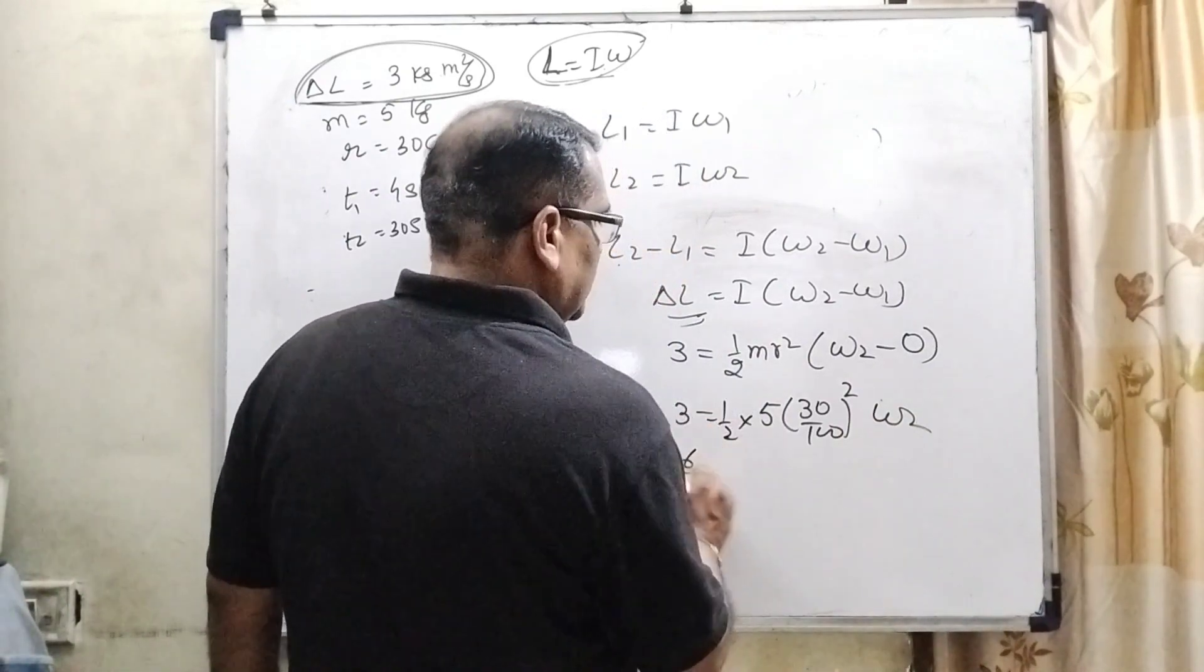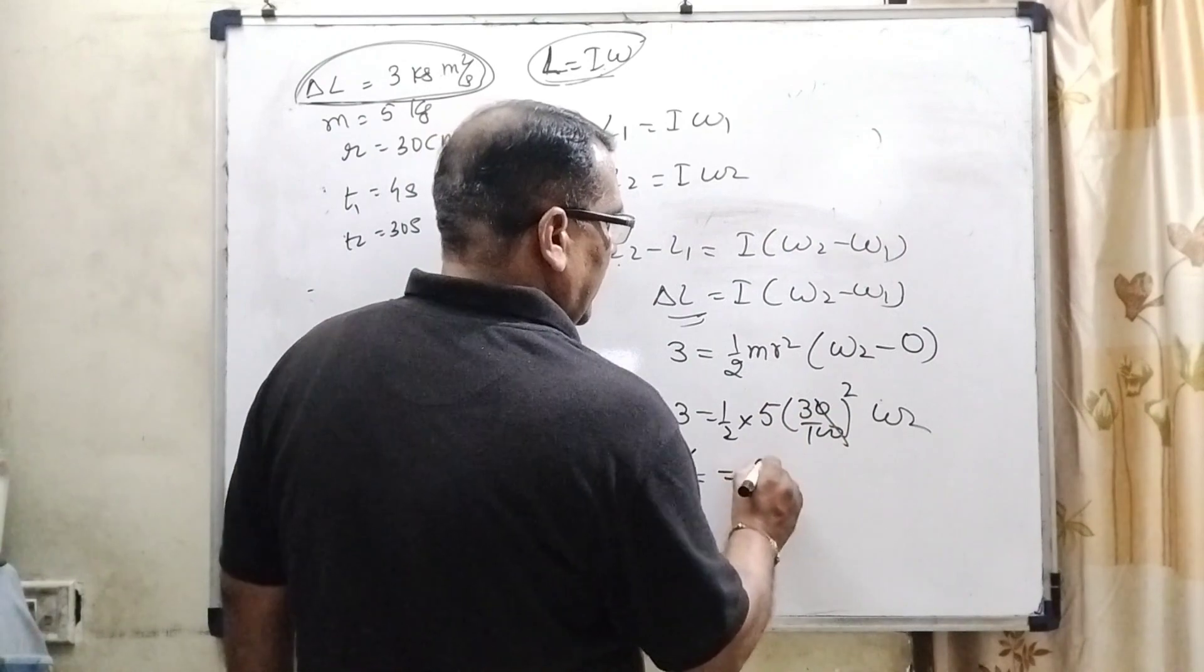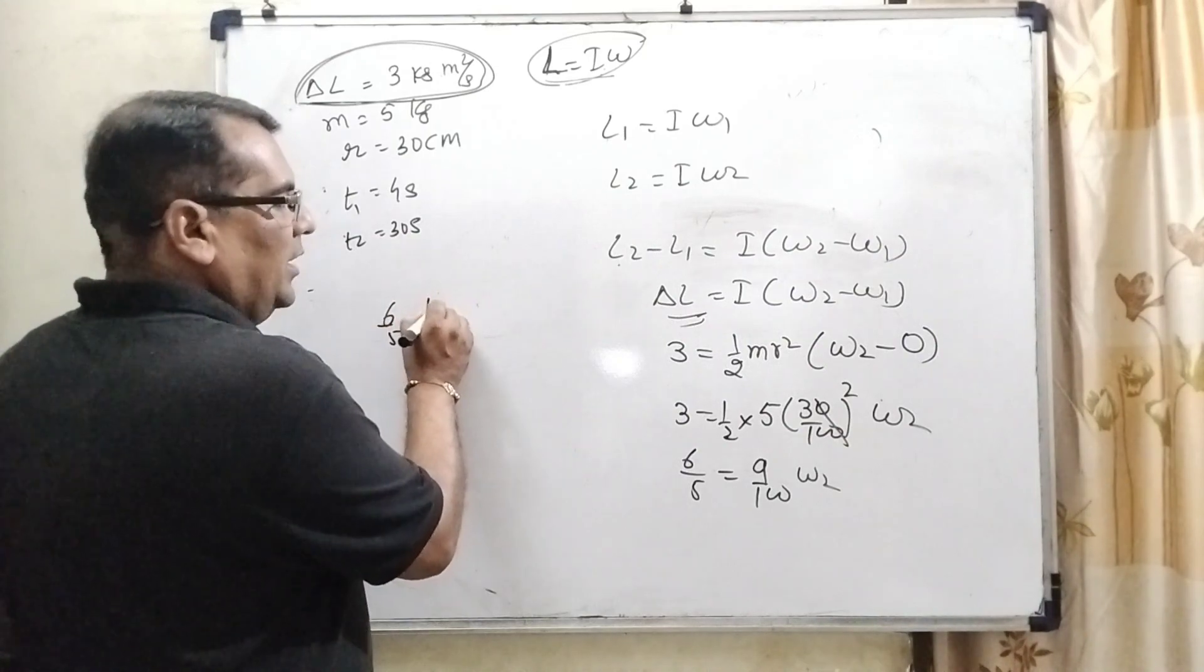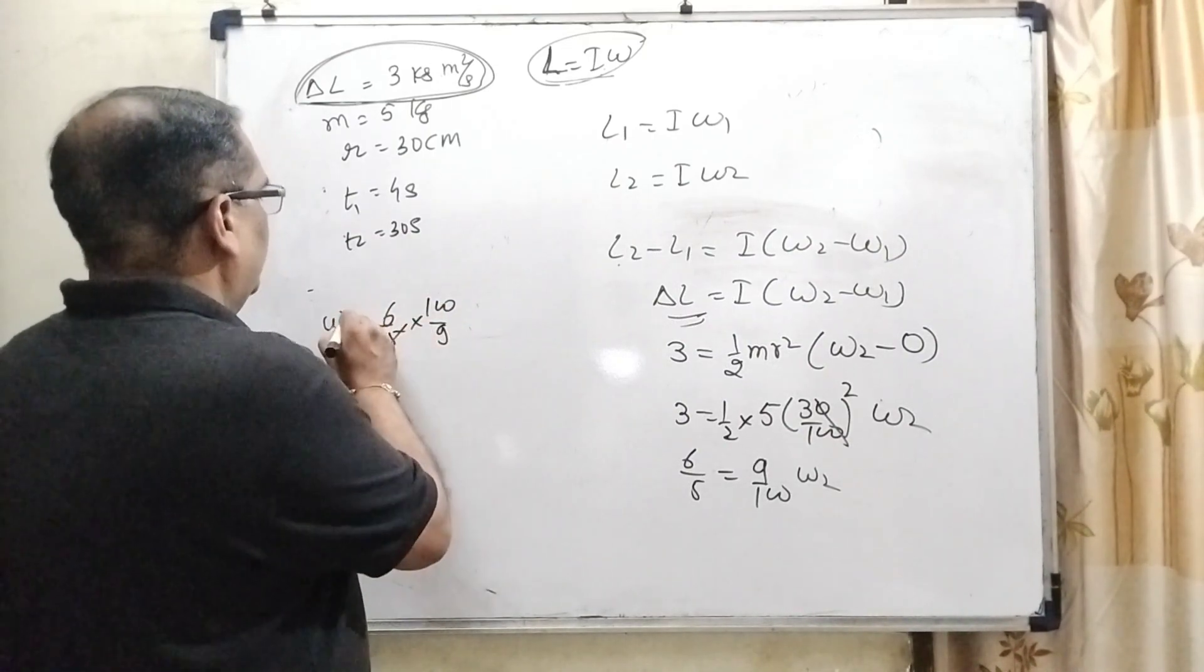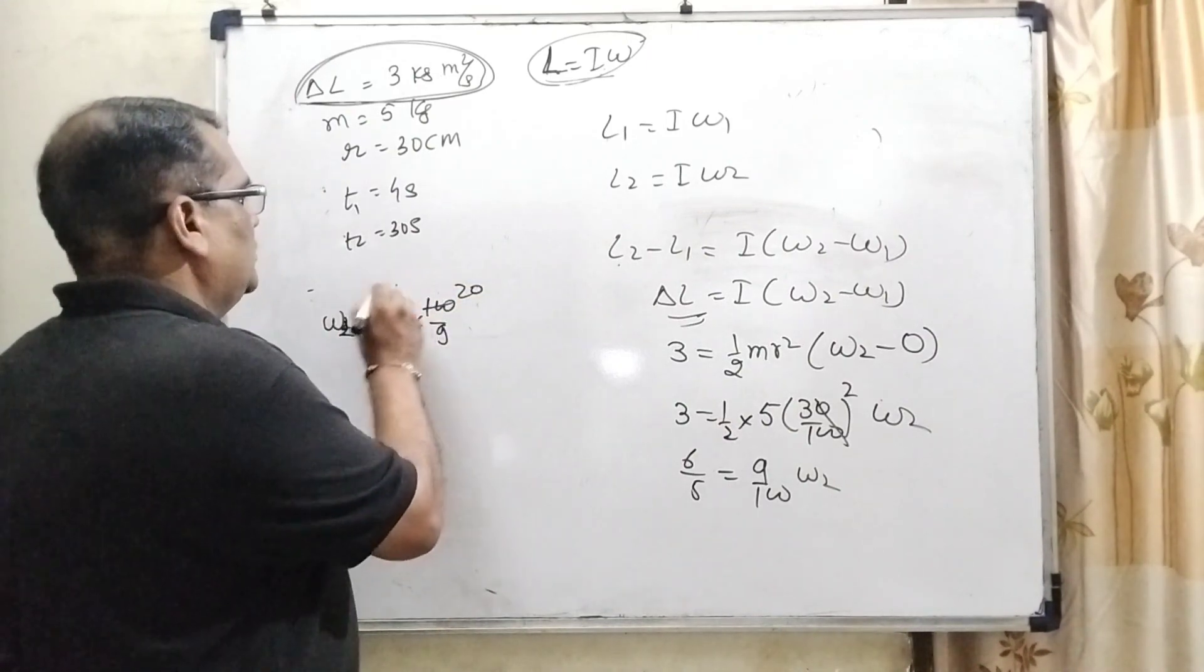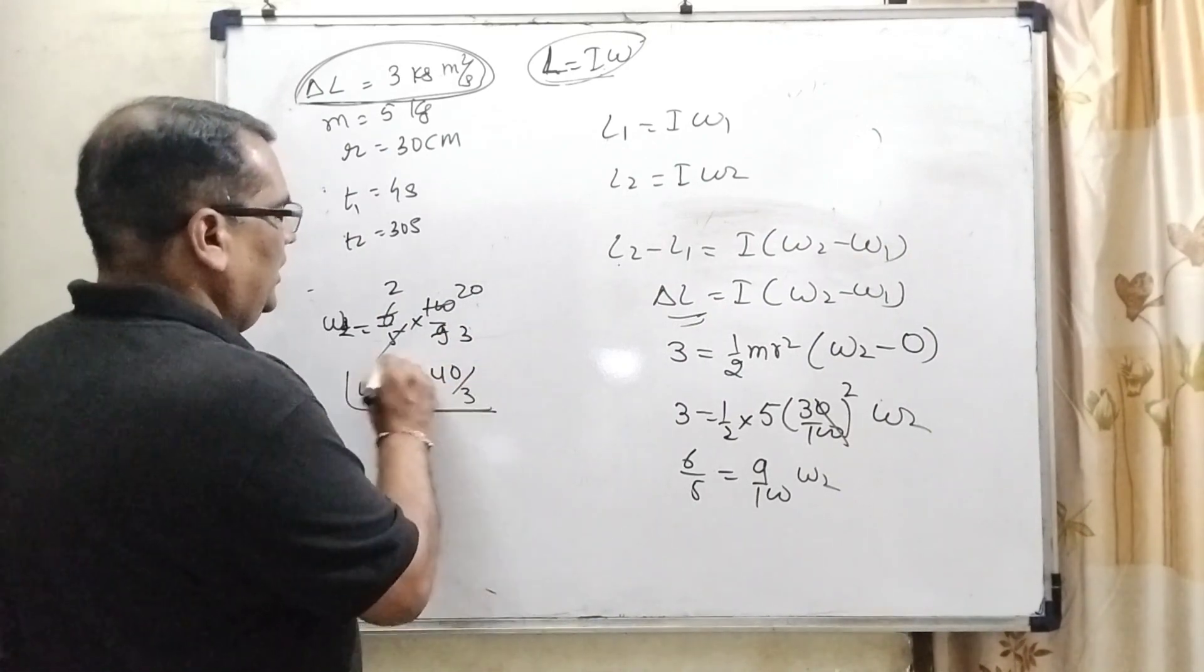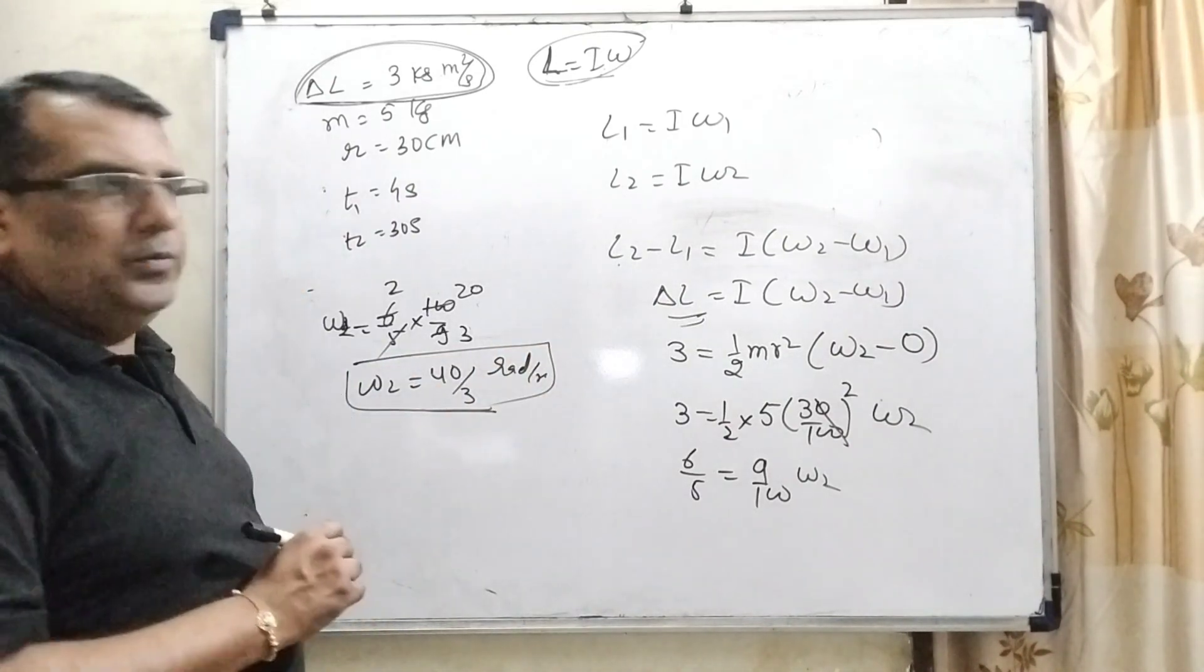So here, 3 equals ½ × 5 × (30/100)² × ω₂. This becomes 3 = (9/100) × ½ × 5 × ω₂. Then solving, we get ω₂ = 40/3 radians per second. So now we have obtained ω₂.